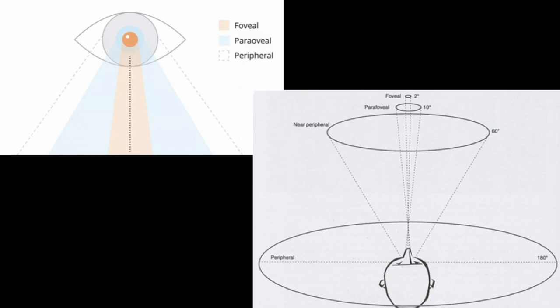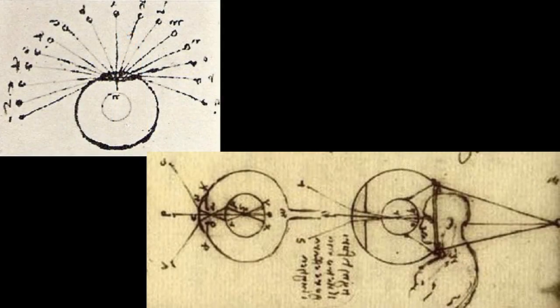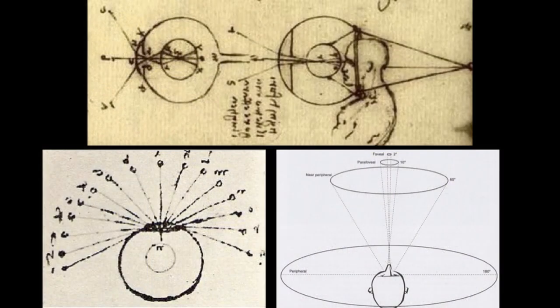Why is this important? Leonardo figured this out. He didn't know anything about cells - the microscope hadn't even been discovered yet. But through observation and reasoning, he figured out more or less how the eye works. We can see from his own diagrams from the late 1400s where he maps out the different resolution of vision, and even comes up with something very close to a diagram of that focused foveal vision. We can put the two together and see how closely his diagram corresponds to what modern science tells us.